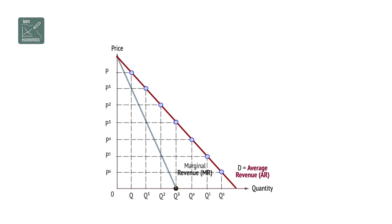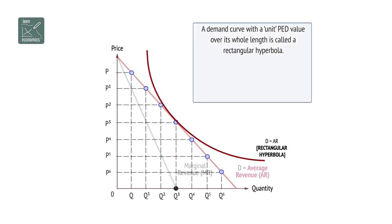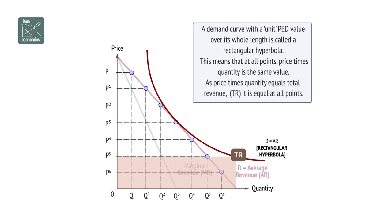A demand curve with a unit PED value over its whole length is called a rectangular hyperbola. This means that at all points, price times quantity is the same value. As price times quantity equals total revenue, TR is equal at all points.